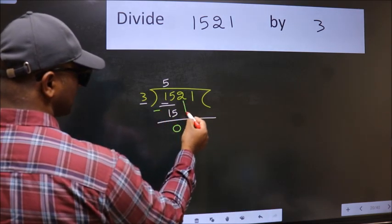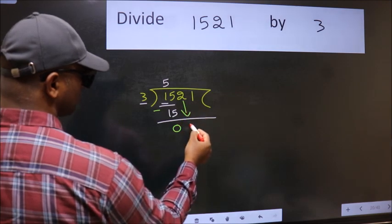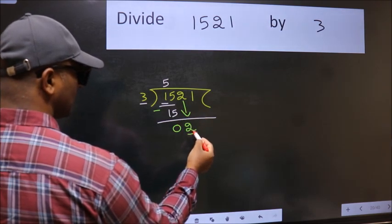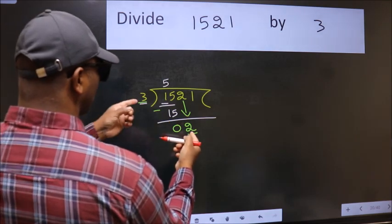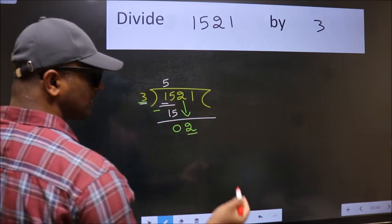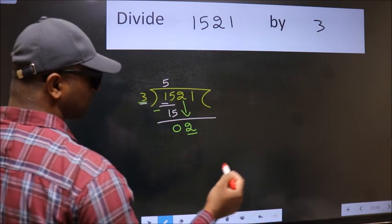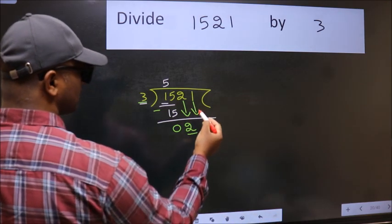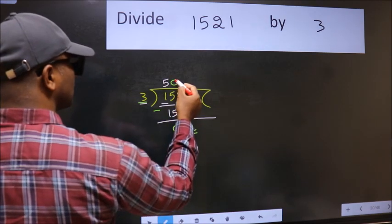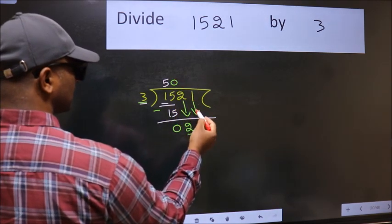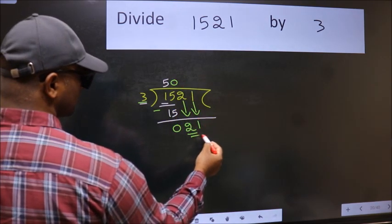After this, bring down the beside number. So 2 down. Now here we have 2 and here 3. 2 is smaller than 3, so we should bring down the second number. And the rule to bring down second number is put 0 here. Then only we can bring this number down. So 21.